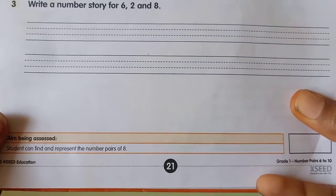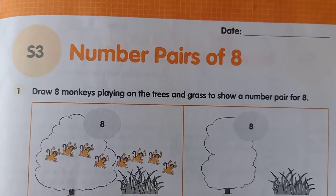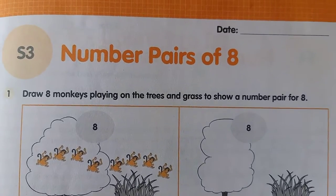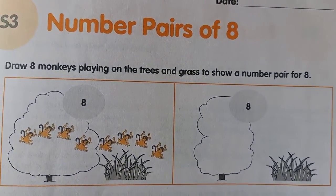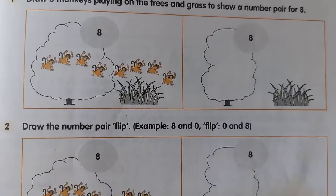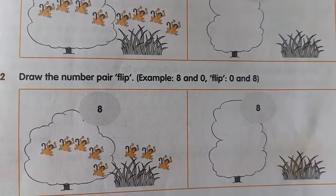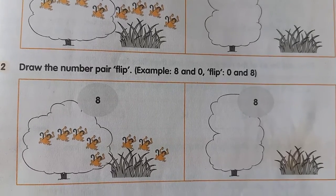Page number 21. First question: draw 8 monkeys playing on the trees and draw to show a number pair for 8. I have just explained how to make different number pairs — go through the board work, observe the 8 number pairs, then write in your volume. Next question: draw the number pair flip. For example, 8 comma 0 — what is the flipping of 8 comma 0? 0 comma 8.